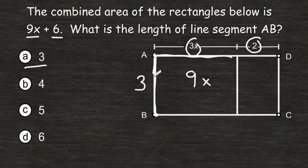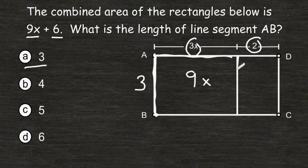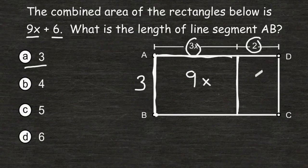And because this line segment is 3, this line segment is 3 as well, so we would multiply 3 by 2 to get the area of this smaller rectangle, and 3 times 2 is 6.